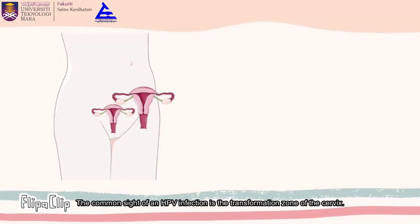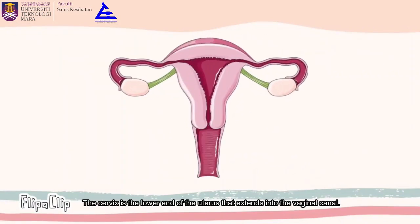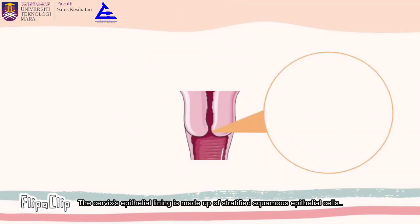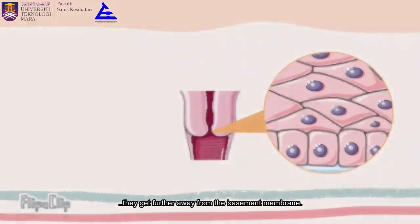The common site of an HPV infection is the transformation zones of the cervix. The cervix is the lower end of the uterus that extends into the vaginal canal. The cervix epithelial lining is made up of stratified squamous epithelial cells that become flatter and more specialized as they get further away from the basement membrane.